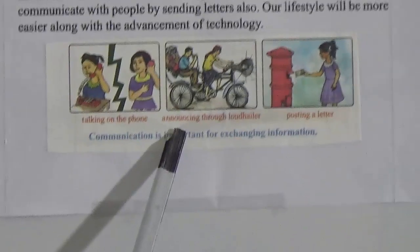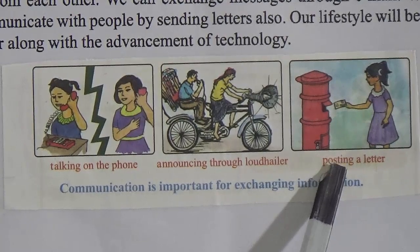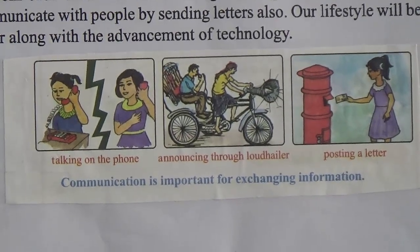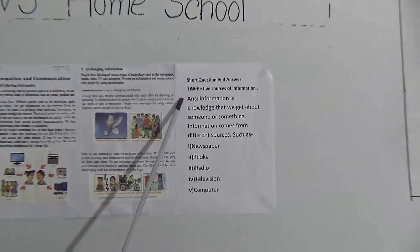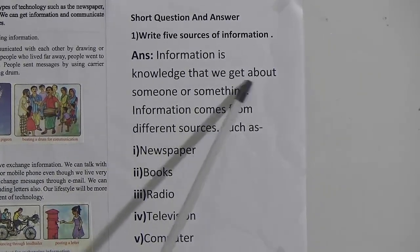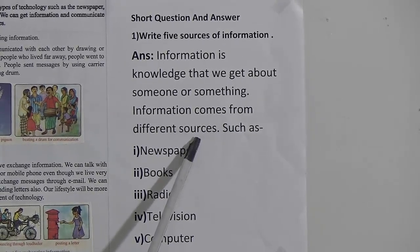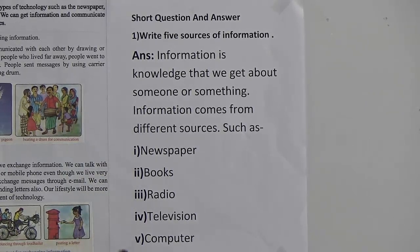In this picture, they are using a telephone to exchange information, and here someone is announcing through a loudspeaker, and someone is posting a letter. Now we will discuss the short question. The question is: Write five sources of information. The answer is: Information comes from different sources such as newspaper, books, radio, television, and computer.